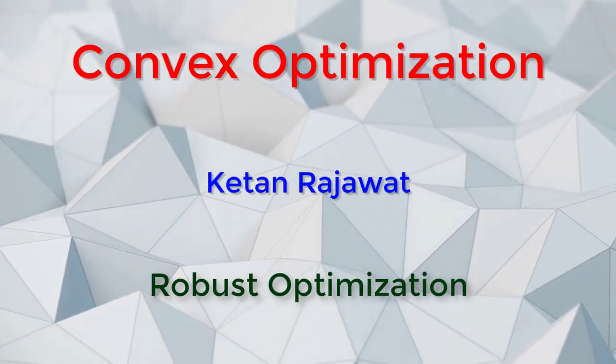We look at an interesting application of convex optimization, which is robust optimization. Specifically, we require robustness of problems to parameter variations.